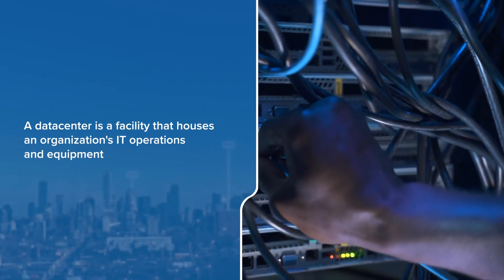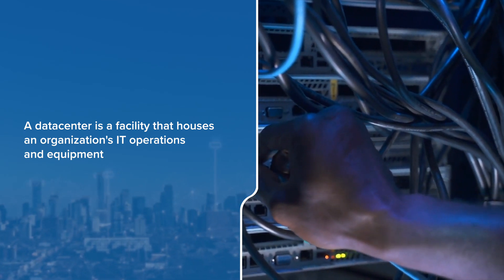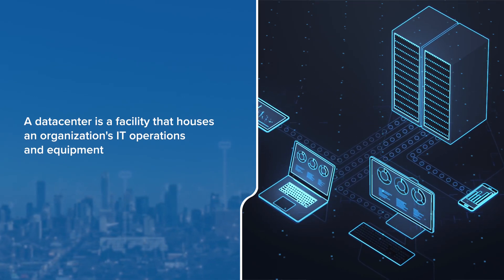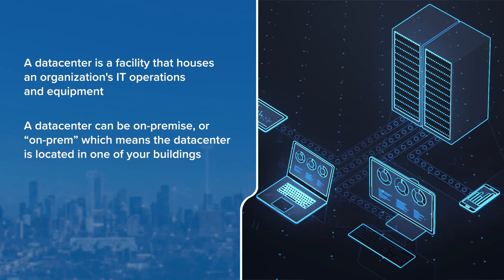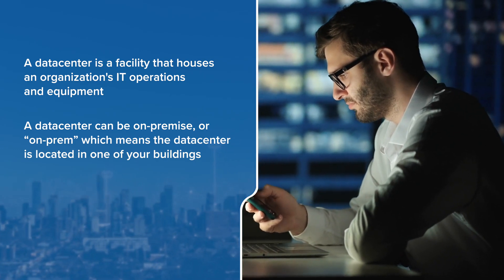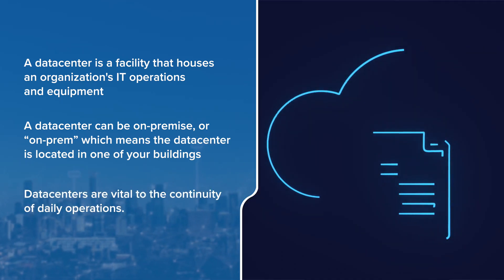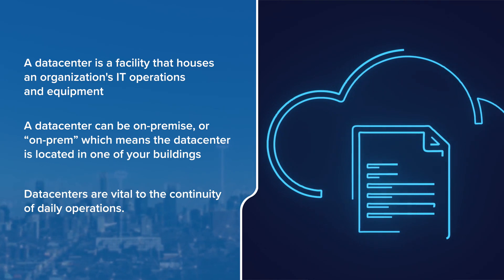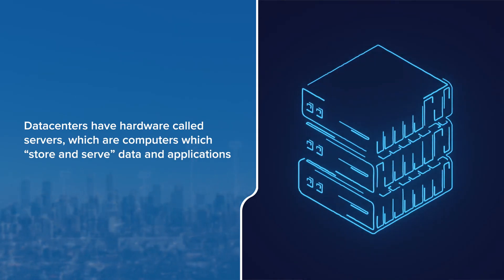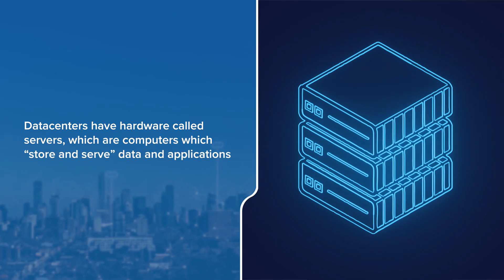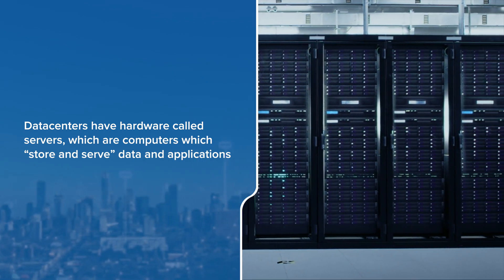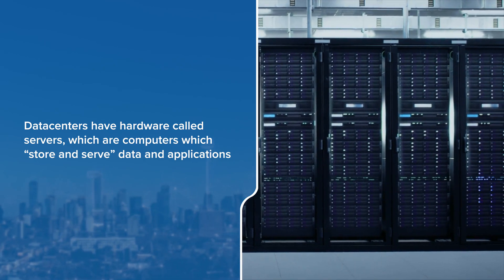A data center is a facility that houses an organization's IT operations and equipment — a group of computers for the purposes of storing and disseminating data and applications. A data center can be on-premise, or on-prem, which means the data center is located in one of your buildings. You likely have a data center on site; sometimes they're in a closet or an office. Because data centers house an organization's most critical and proprietary assets, they are vital to the continuity of daily operations. Data centers have hardware called servers — computers which store and serve data and applications. At its core, cloud computing is massive data centers run and managed by companies like Amazon, Microsoft, and Google.